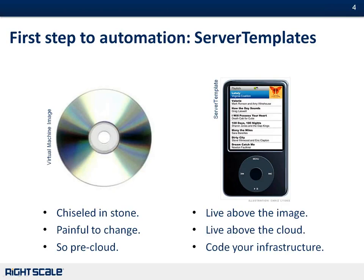If a script isn't quite right, you just change one line and rerun it. If they're not in the right order, you simply drag and drop them around just like you would on a playlist. If you have a few scripts that regularly accomplish certain tasks, you put them on a lot of different server templates. Essentially you are coding your infrastructure rather than manually setting it up by hand. This allows you to live above the image and above the cloud. I used to manage a lot of servers by hand, and once I joined RightScale, I really started to realize the power of server templates.